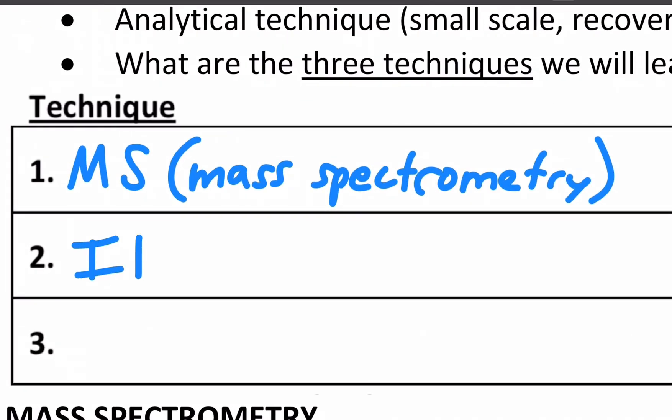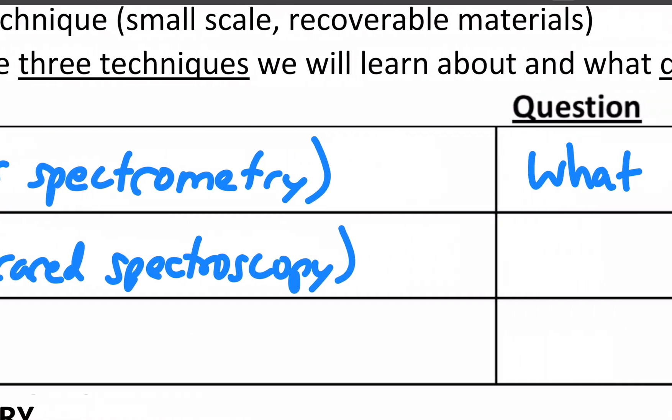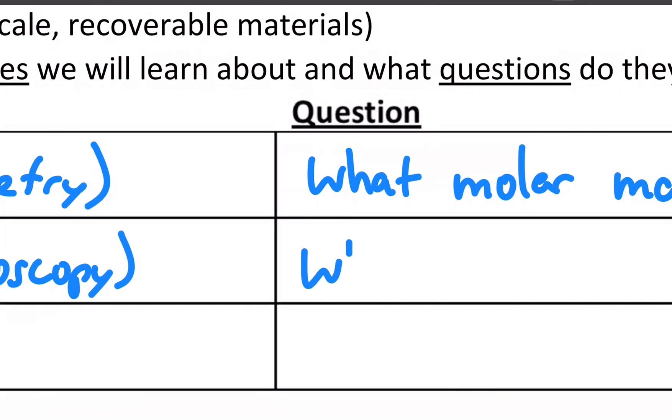Later on, we'll learn about what's called IR, which stands for infrared spectroscopy. The word spectroscopy means how light interacts with matter. And it essentially answers the question, what bonds, what types of bonds are in a molecule?